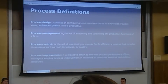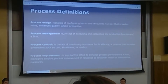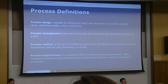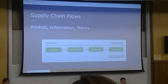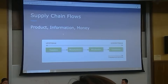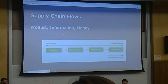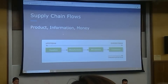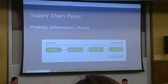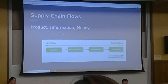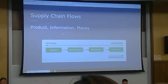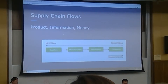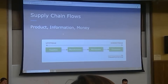Any questions on process definitions? Okay, so these are the flows of the supply chain. Product flows downstream. Information should flow upstream from the customers, and money flows upstream. What does product flow upstream? Reverse logistics returns.